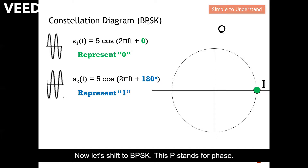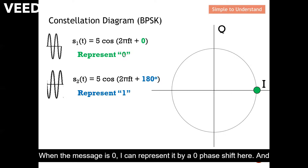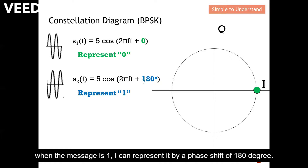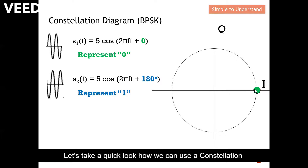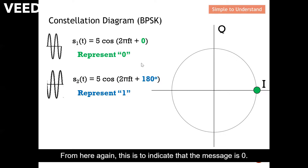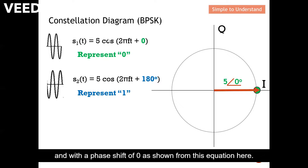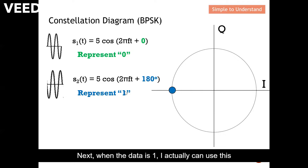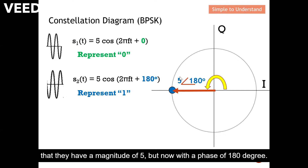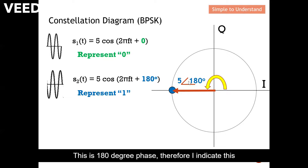Now let's shift to BPSK, where the P stands for phase. When the message is 0, I represent it with a 0-degree phase shift. When the message is 1, I represent it with a phase shift of 180 degrees. In the constellation diagram, the green dot indicates message 0 with amplitude 5 and phase shift of 0 degrees. The blue dot indicates message 1 with a magnitude of 5 but a phase shift of 180 degrees.